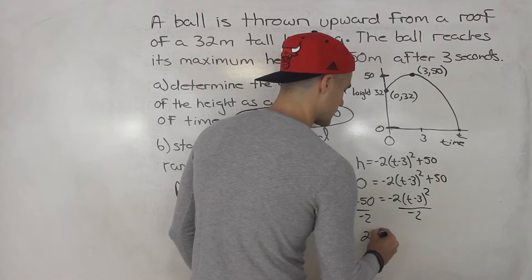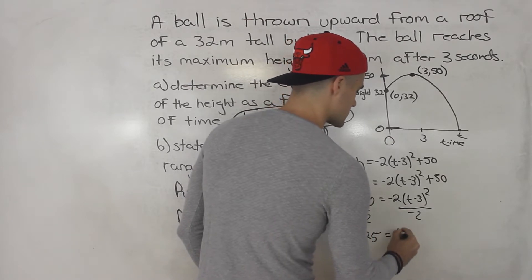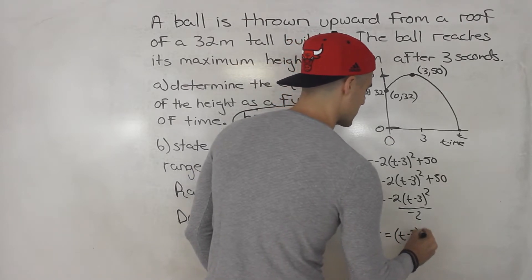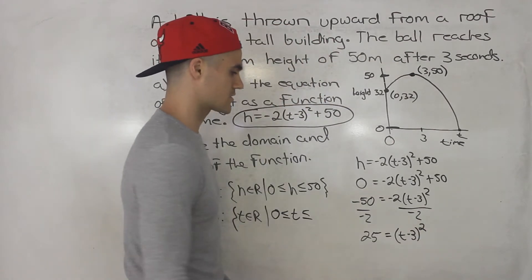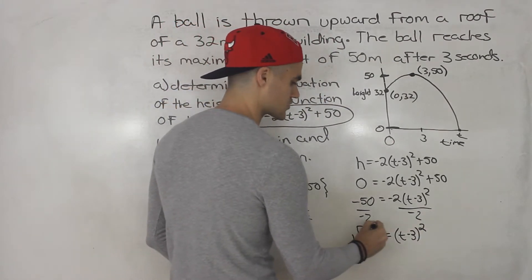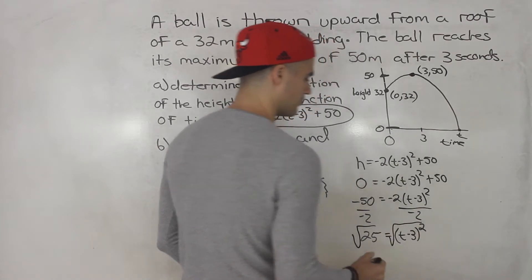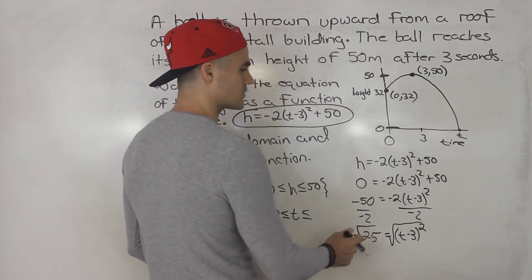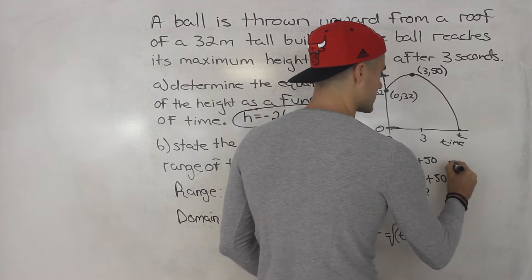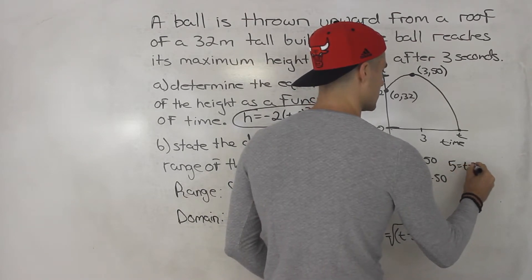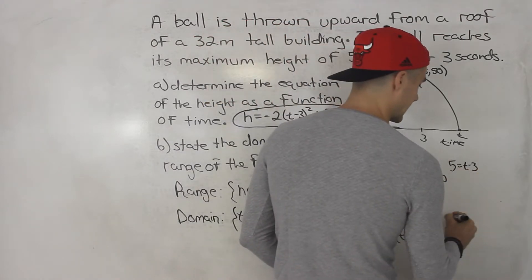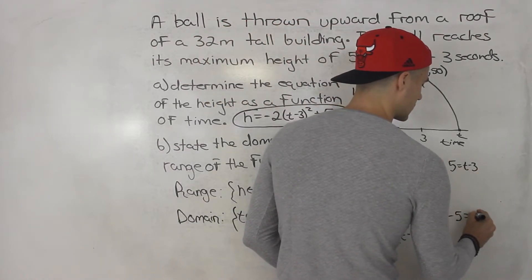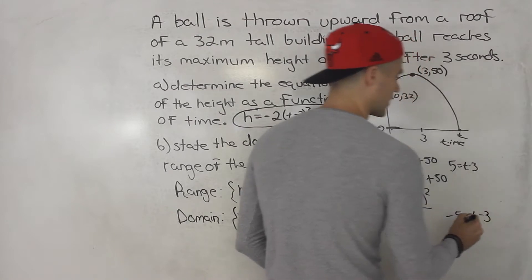So we'd have 25 equals t minus 3 squared. And then you want to get rid of this exponent here, the square. So what we can do is we could square root both sides. So square root of 25, we'd have positive 5 equals t minus 3. And then the square root of 25 can also be negative 5 equals t minus 3. You got to do both cases.